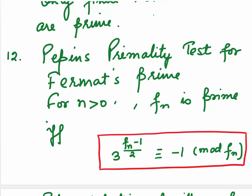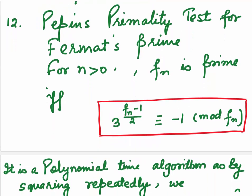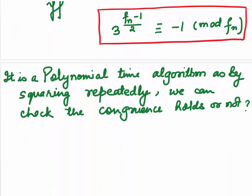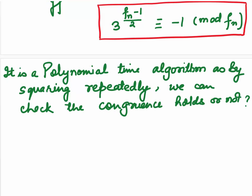Twelve. Pepin's primality test for Fermat's prime is given as follows. For n greater than 0, Fn is a prime if and only if 3 to the power Fn minus 1 upon 2 is congruent to minus 1 mod of Fn. Now this primality testing is done to check whether a Fermat number is a Fermat prime or not. As by squaring both the sides repeatedly, we can check the congruence holds or not. And then say whether my Fermat number is a Fermat prime or not.